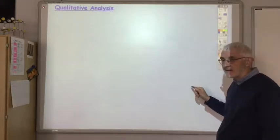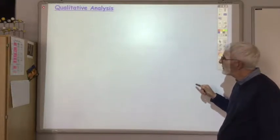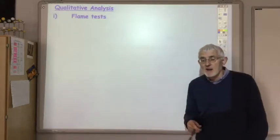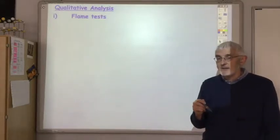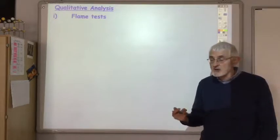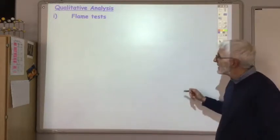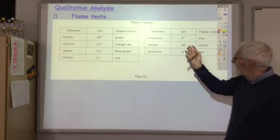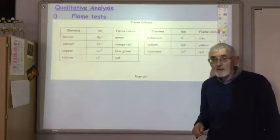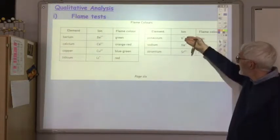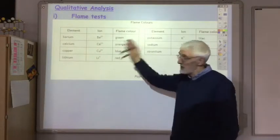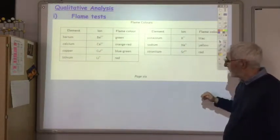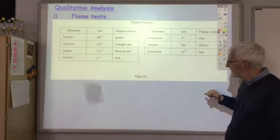There are two qualitative analysis techniques you should know about. The first one is flame tests. When interpreting flame test results, you use the information in your data booklet — on page six you'll find a table with the flame colors from various metal ions. These are the only ones you'll need to deal with.